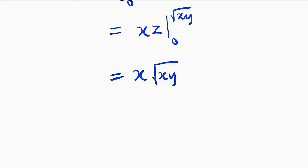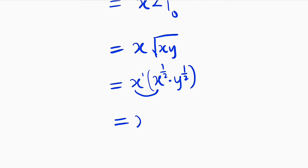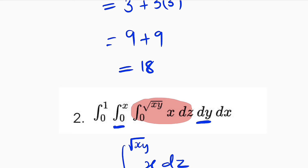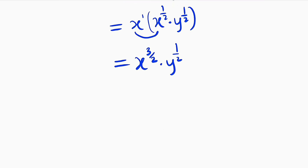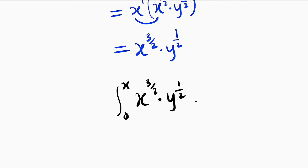Let us further simplify. From the law of indices, this can be written as x multiplied by x to the power of 1 over 2, multiplied by y to the power of 1 over 2. This x has a power of 1, so multiplying x by x to the 1 over 2 gives x to the power of 1 plus 1 over 2, which is 3 over 2. So this equals x to the power of 3 over 2 multiplied by y to the power of 1 over 2. This is our new function and we are going to integrate it with respect to y, from 0 to x.